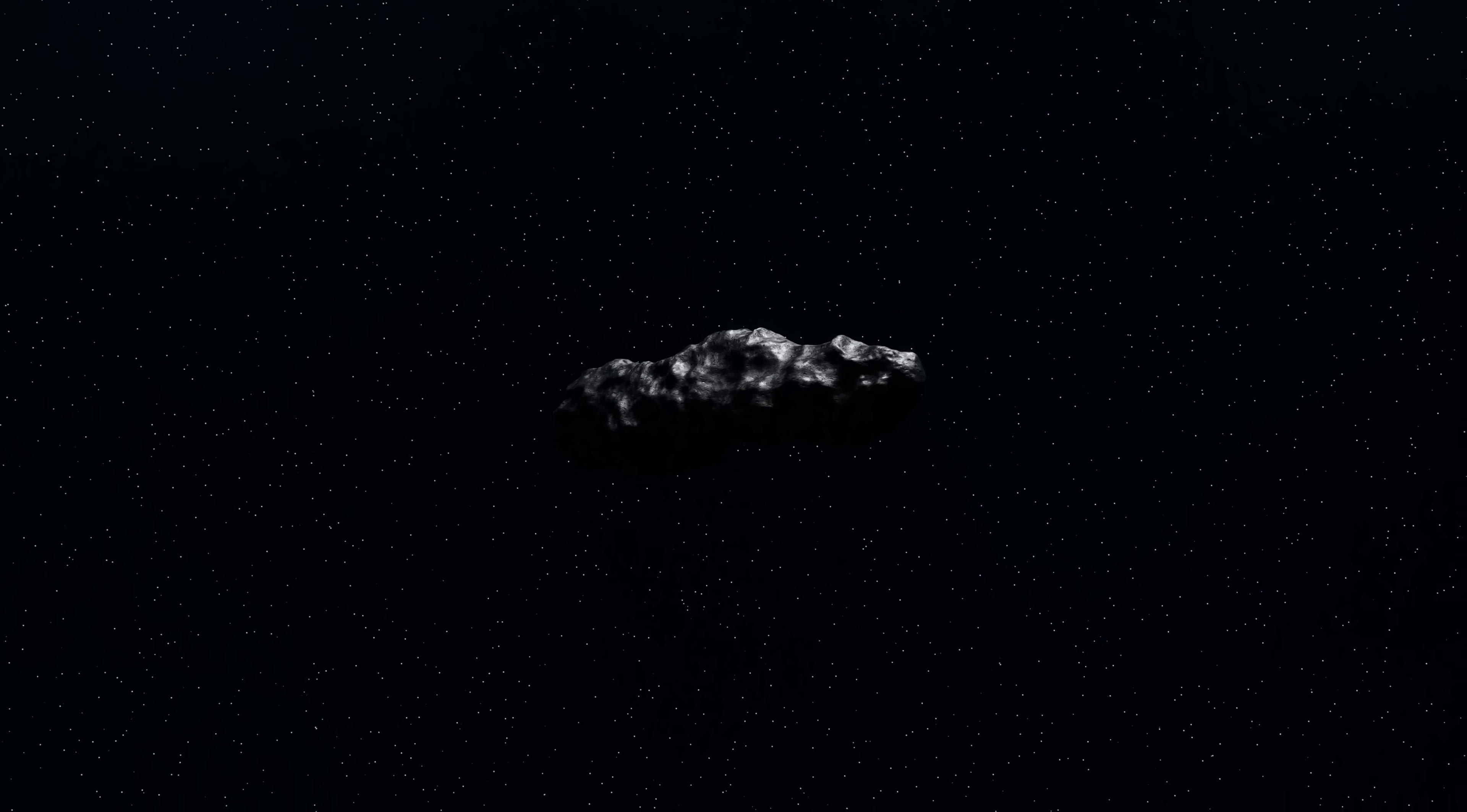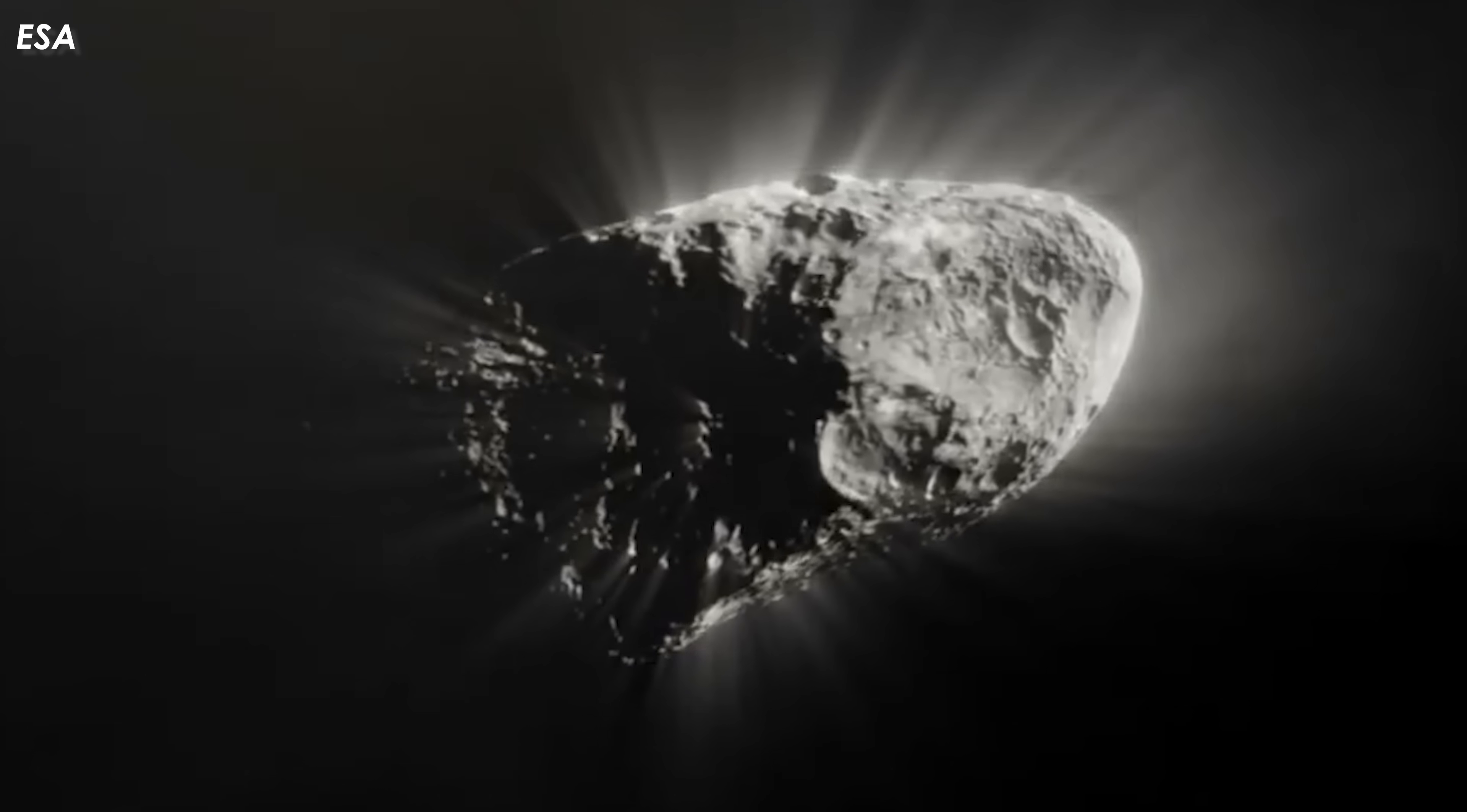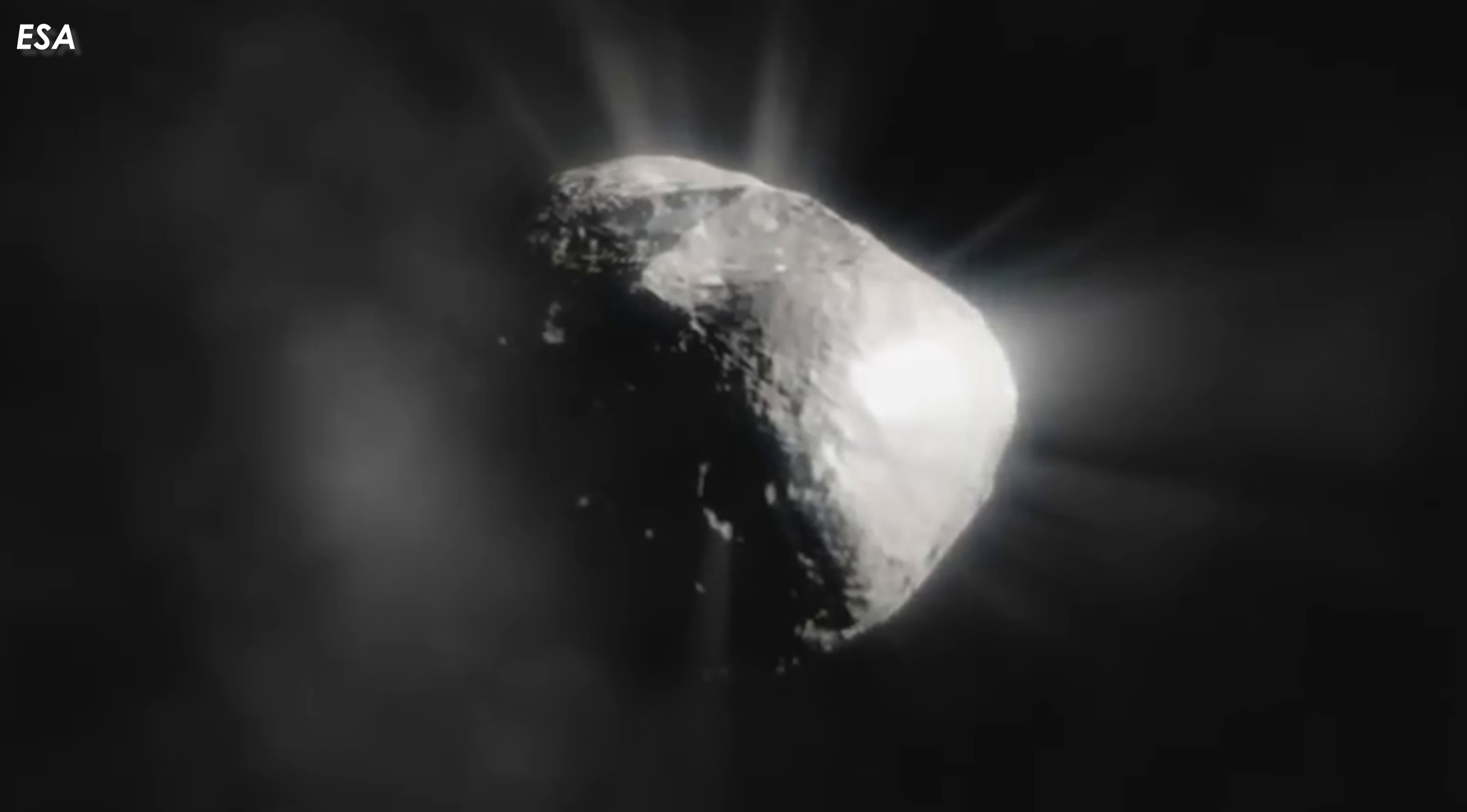One thing is clear. Time is running out. The hyperbolic orbit of 3I Atlas will soon carry it out of the solar system forever. If we fail to gather enough data now, it will vanish. Just like Oumuamua, leaving behind nothing but unanswered questions. By early 2026, as 3I Atlas moves farther from Earth and closer to Jupiter, that will be our last real chance to observe it up close. After that, it will fade into the eternal darkness of interstellar space.